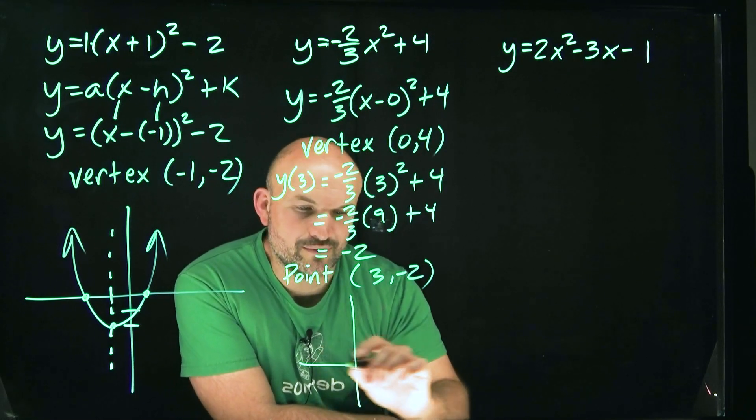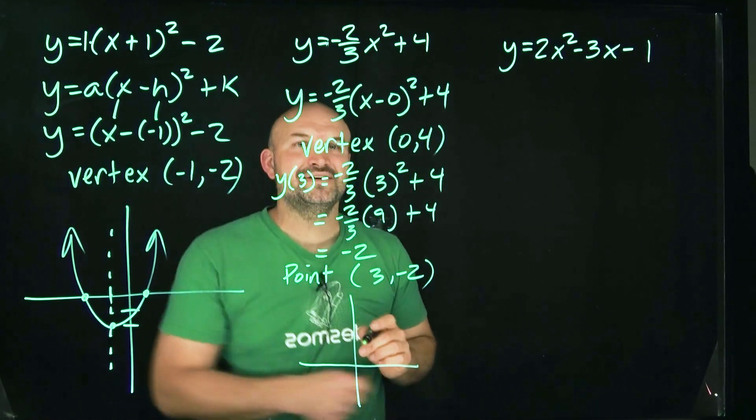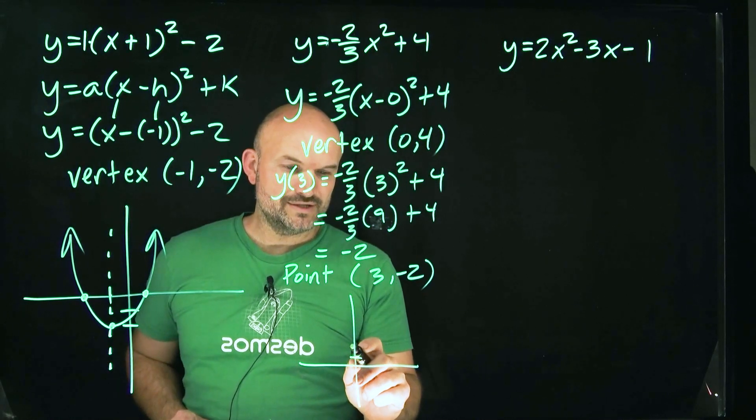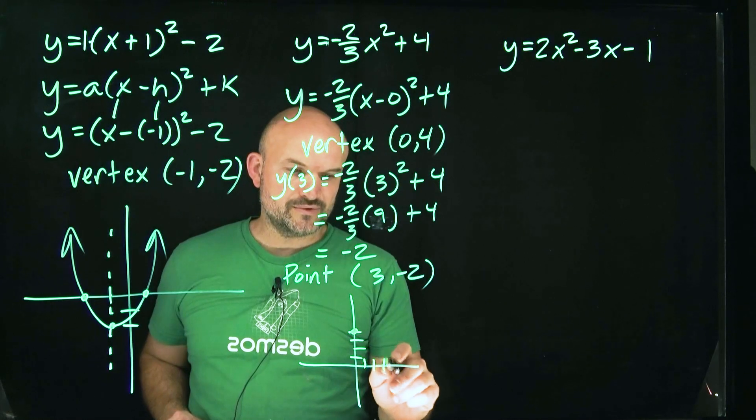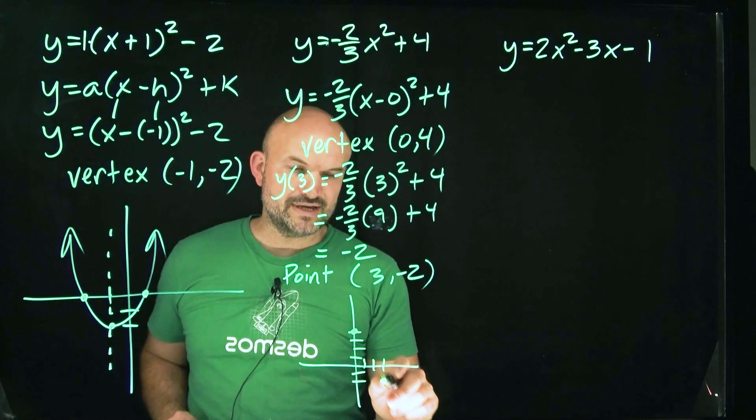So now I have a point here, which is going to be three comma negative two. So let's go ahead and graph this with the remaining work that I have. We have a vertex at zero four. So one, two, three, four. And then I have a point at three negative two. One, two, three, down two.